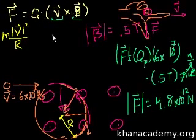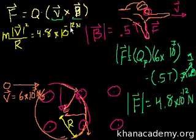This is going to be equal to this, which we figured out is going to be equal to at least the magnitudes. The magnitude of this is equal to the magnitude of this. And the magnitude is 4.8 times 10 to the minus 12 newtons.